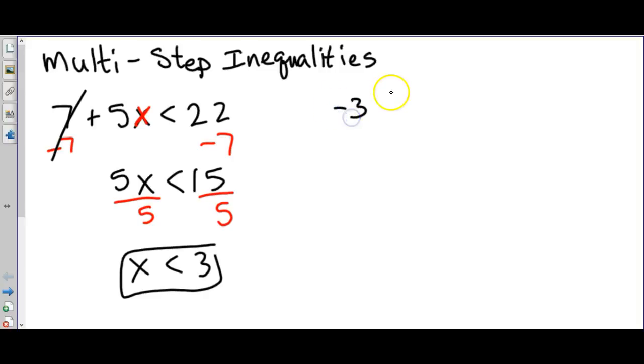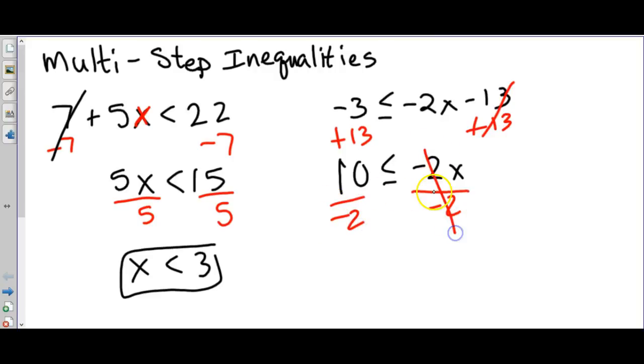You can do a similar thing even if the variable is on the right side instead of the left. We'd still go through and do opposites and we want to do the plus or minus opposite first. So since minus 13 is here next to the variable we want to add 13 to both sides which gives us 10 less than or equal to negative 2x. Then our next opposite is negative 2 times x so we divide by negative 2 and we get negative 5. Now because we divided by a negative 2 we also at this point have to switch the inequality sign. Anytime you divide or multiply by a negative value then you switch the inequality sign.